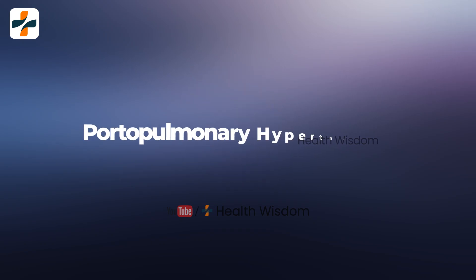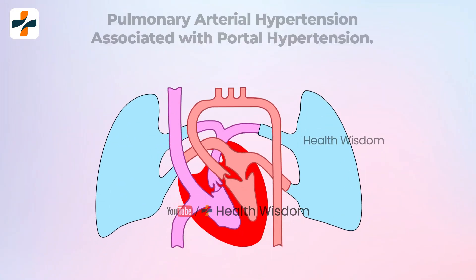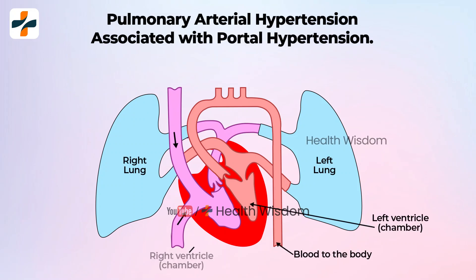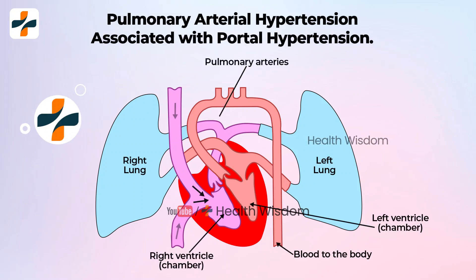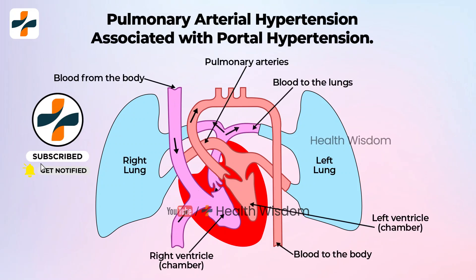3. Portopulmonary Hypertension. Pulmonary arterial hypertension is high blood pressure in the arteries that carry blood from your heart to your lungs.